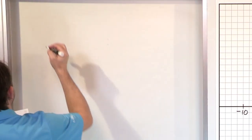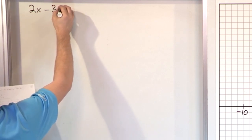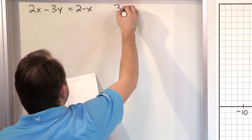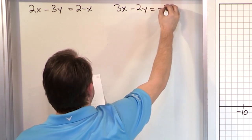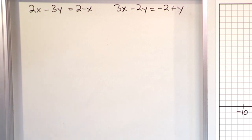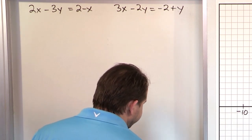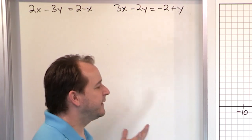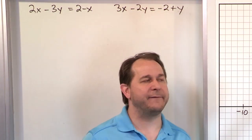The next set of equations looks like this: 2x minus 3y is equal to 2 minus x, and the next part is 3x minus 2y is equal to negative 2 plus y. Just like with all of these things, we cannot just look at these and see if they're consistent or inconsistent - you're not going to be able to do that. The only way is to graph them and see what they look like. So let's rearrange the terms, get them into a form we can graph, and then compare.